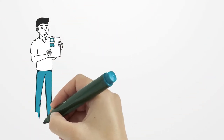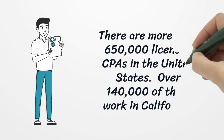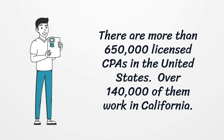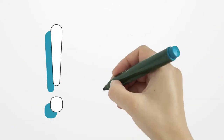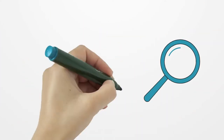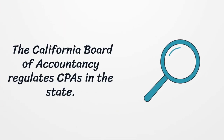There are more than 650,000 licensed CPAs in the United States, and over 140,000 of them work in California. You can find the status of each license by using a California Certified Public Accountant license lookup.